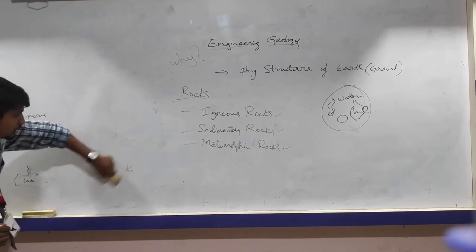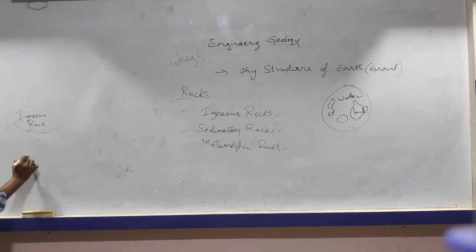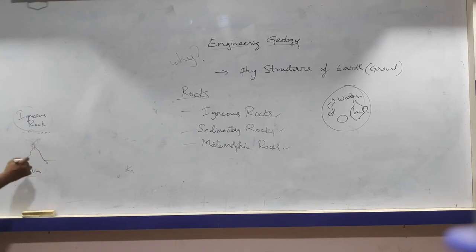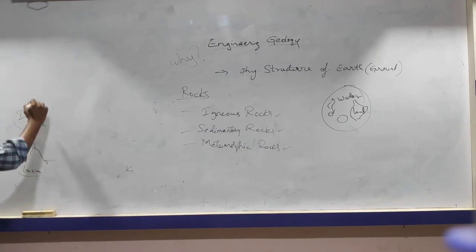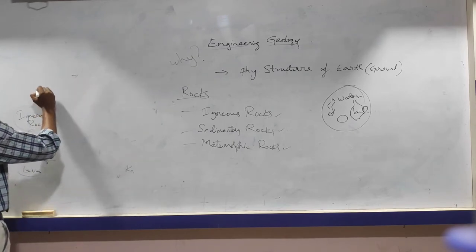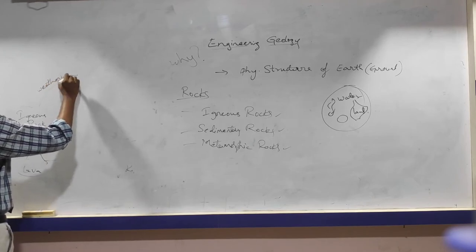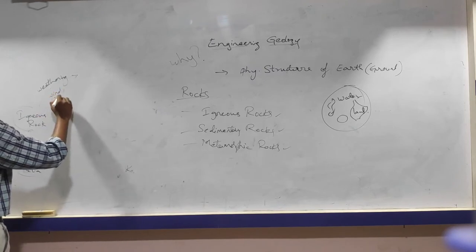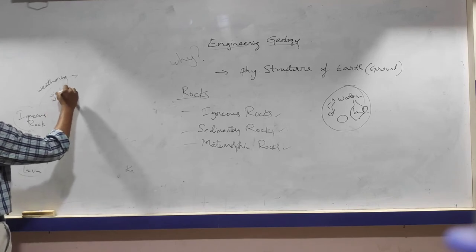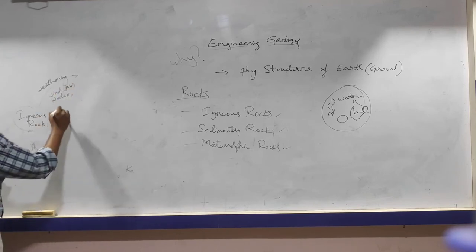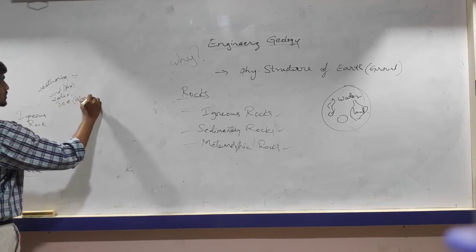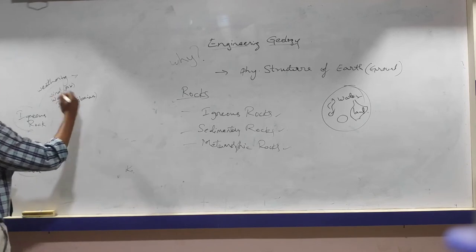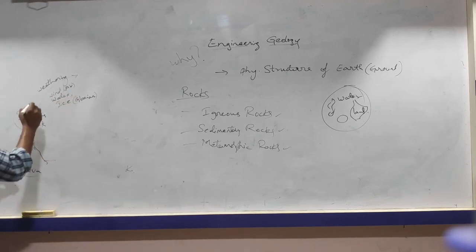Igneous rocks are formed directly from the magma or lava. Now, because of weathering actions — by wind or air, water, ice, or glaciers — weathering actions happen on the igneous rocks.